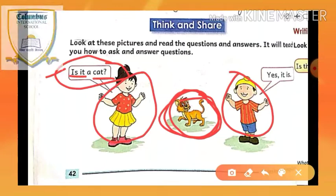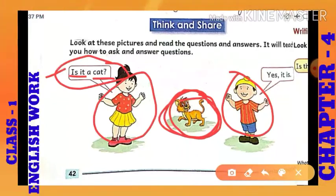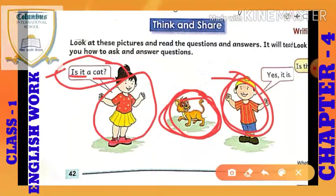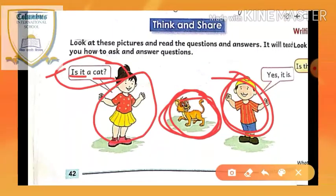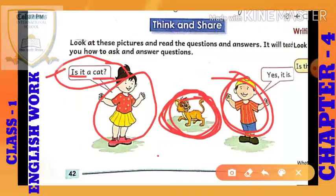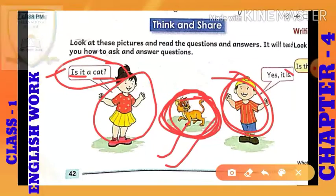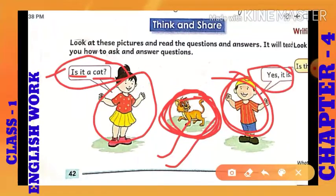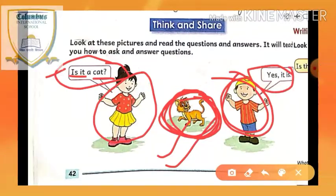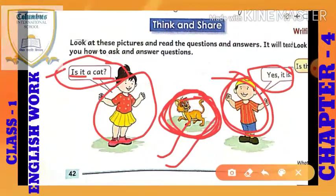This girl is asking to this boy: 'Is it a cat?' — kya yeh ek billi hai? You can see and identify what type of animal is there. It's a cat. So if there is a cat, then that boy replies: 'Yes, it is.' The answer is 'Yes, it is' — yes, it is a cat.